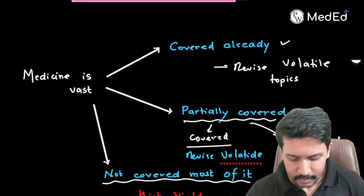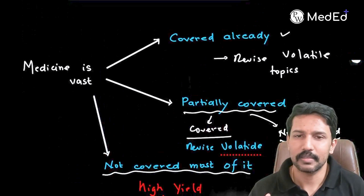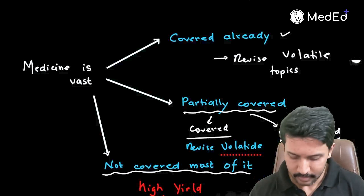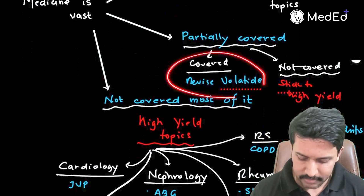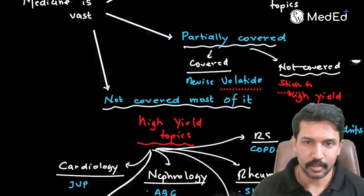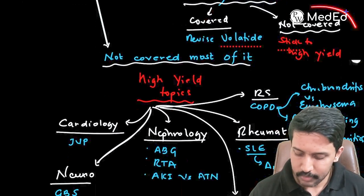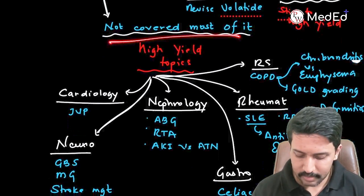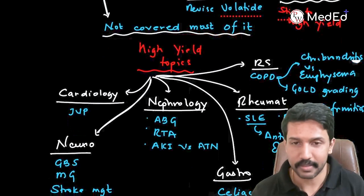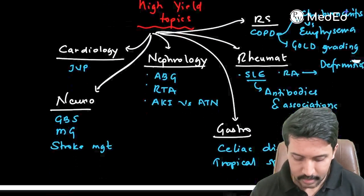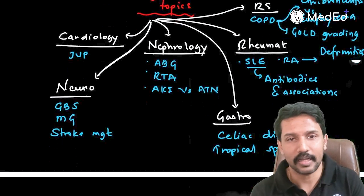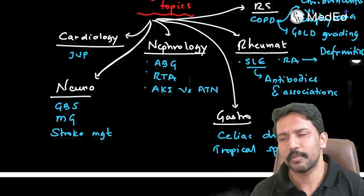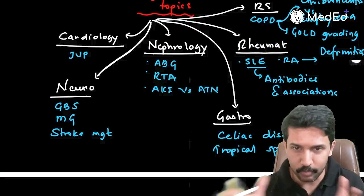Let me summarize: if you have already covered most of Medicine, revise the volatile topics. If you are partially covered, revise volatile topics from the covered systems and stick to high-yield from uncovered systems. If you have not covered anything, just stick to the high-yield topics listed. You can't do everything from Medicine, but don't miss these recommendations — you should be able to squeeze a decent number of marks from them.